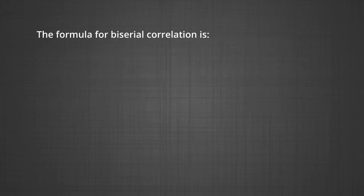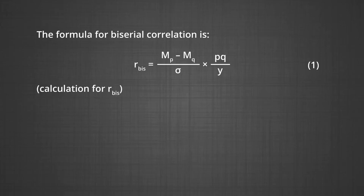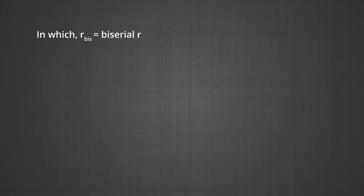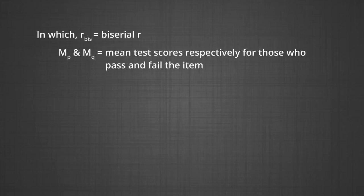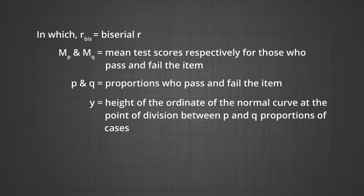The formula for R biserial is: R_bis = (M_P - M_Q) / (σ × (pq/y)). MP and MQ are the mean test scores respectively for those who pass and fail the item. P and Q are proportions who pass and fail the item. Y is the height of the ordinate of normal curve at the point of division between P and Q, and sigma is the standard deviation of the entire group.